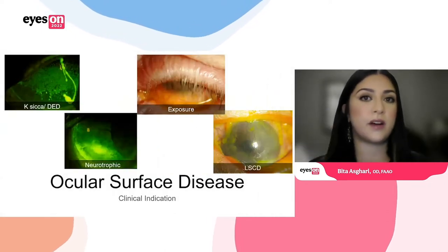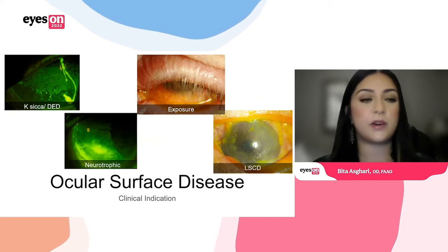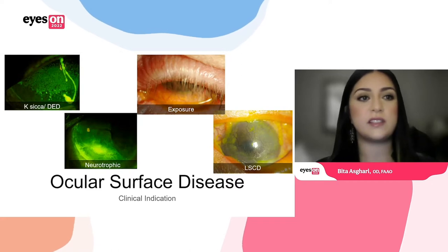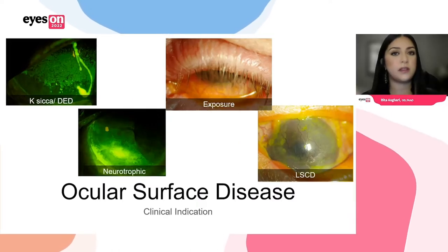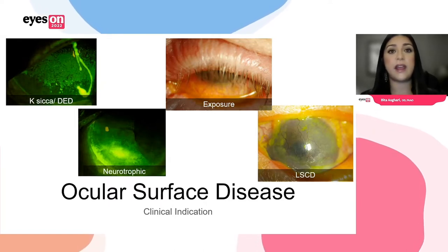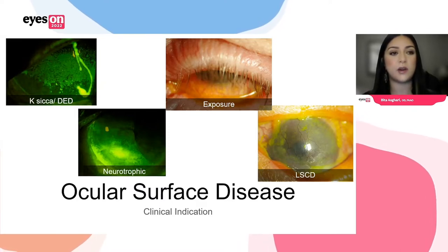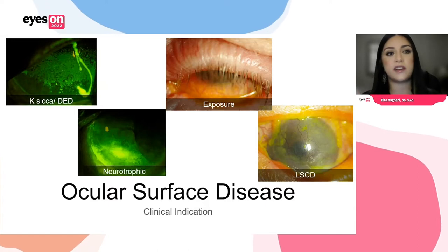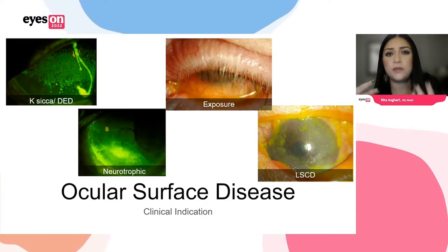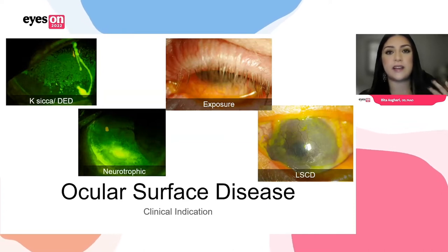In our clinical practice at Boston Sight where I work, our bread and butter is fitting patients for ocular surface diseases. There's a vast range of conditions you can fit scleral lenses for in the ocular surface disease category. To put them into four simplified categories: you have keratoconus sicca or dry eye disease, neurotrophic corneas, exposure, and — last but certainly not least — limbal stem cell deficiencies.